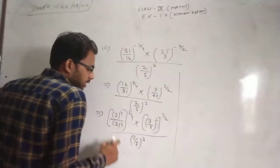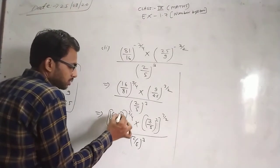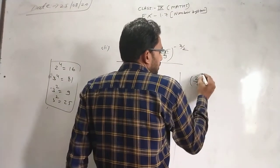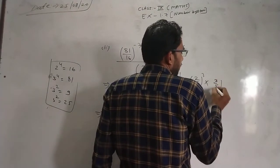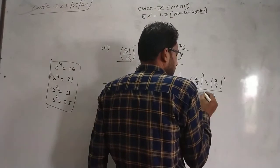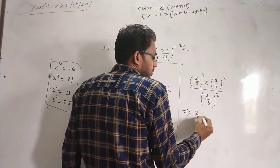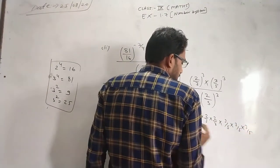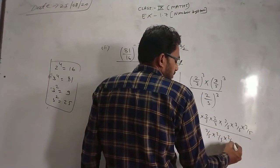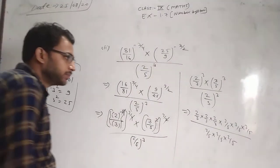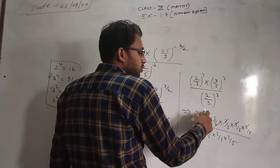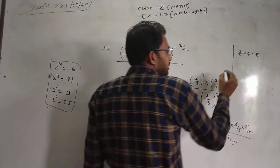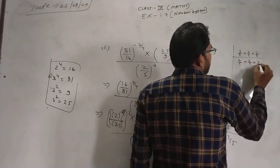Now let's see: 2 to power 4, whole power 3 by 4 — the 4s cancel, leaving 2 to power 3. For 3 to power 4, whole power 3 by 4 — the 4s cancel, giving 3 to power 3. And 3 upon 5 squared, whole power 3 by 2 — the 2s cancel, giving 3 upon 5 to power 3. So you write 2 upon 5, 2 upon 5, 2 upon 5 — all multiplied together.